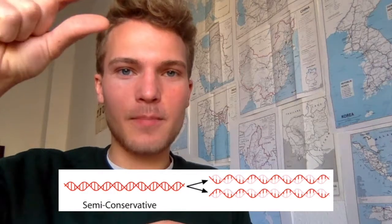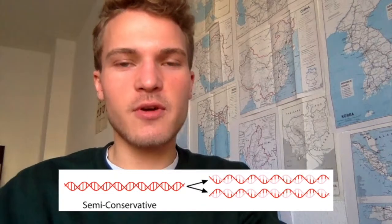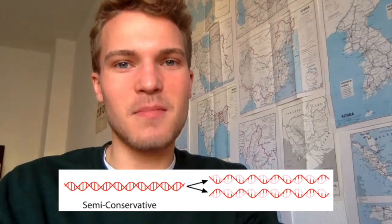We end up with two double-stranded DNA molecules, both semi-conservatively created — one straightforward from the leading strand, one more complex from the lagging strand. DNA ligase joins the Okazaki fragments by creating phosphodiester bonds in the backbone: a bond between the third carbon of the pentose sugar and the phosphate group of the adjacent fragment, completing the sugar-phosphate backbone. And with that, replication is done.